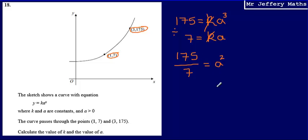So that means that a squared will be equal to 175 divided by 7, which is going to give me 25. So I know that a squared is equal to 25, which means that a will be equal to 5.